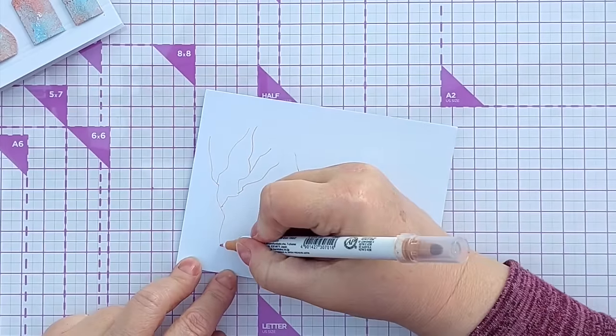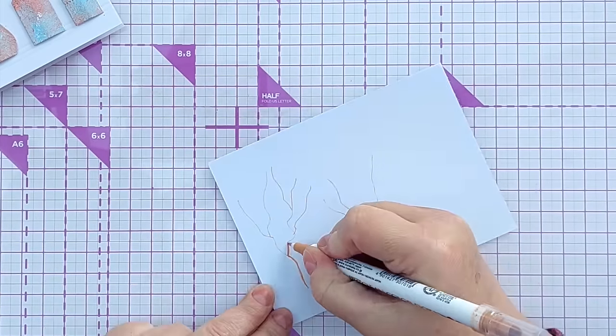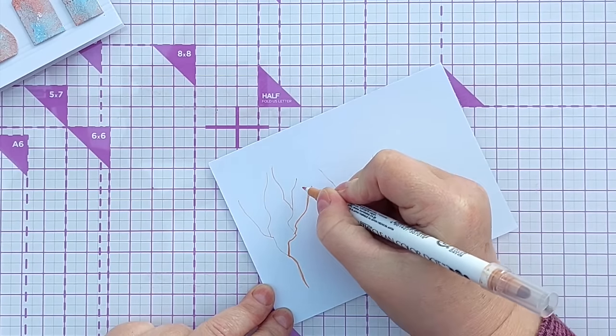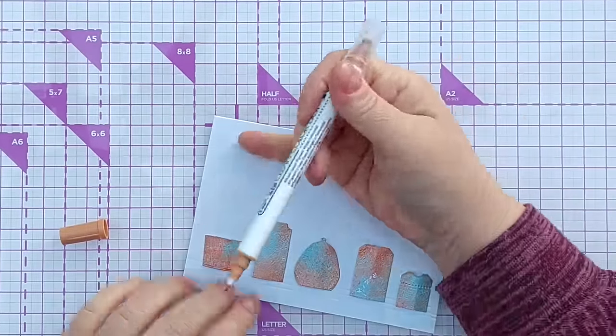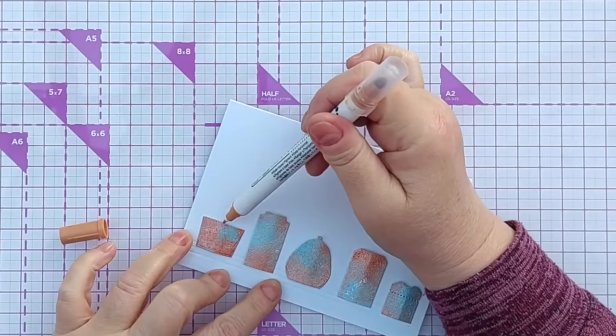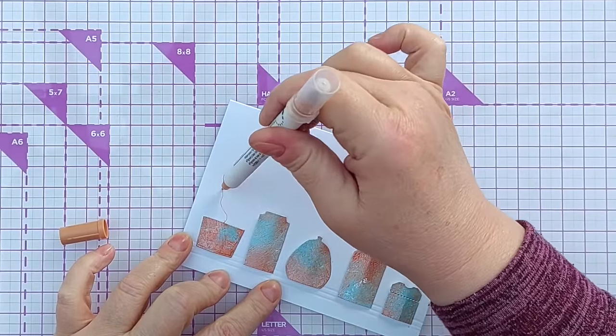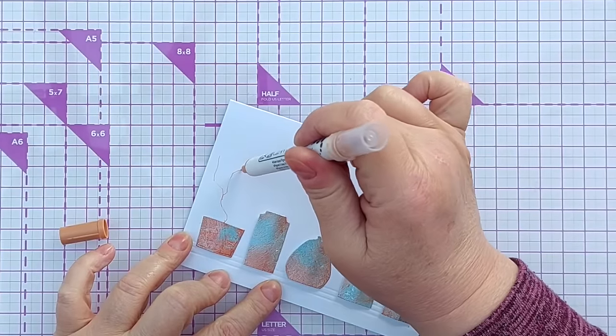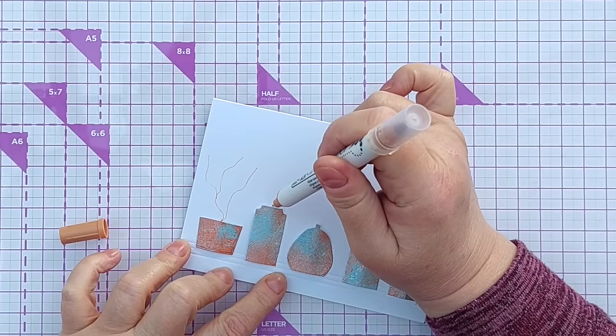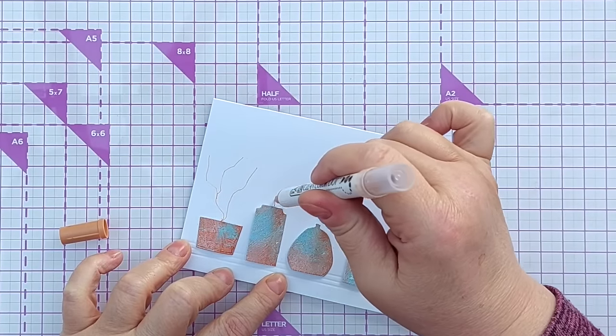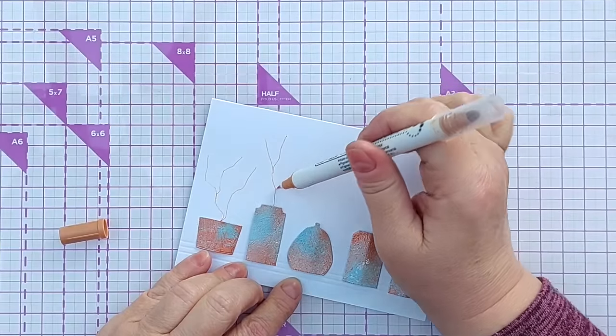And because I'm not holding it with any real control I'm getting some really natural looking branch lines. And when you've done that if you want to you can then go in and colour them and widen them and maybe neaten them up if you want to. I'm going to do the same thing on my card. Start with my tip of my pen underneath my vase so that it appears to be coming out of the vase.